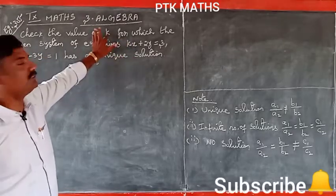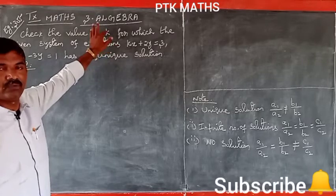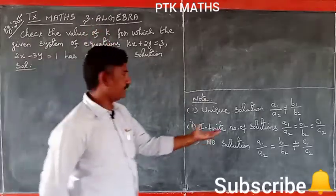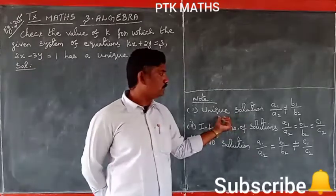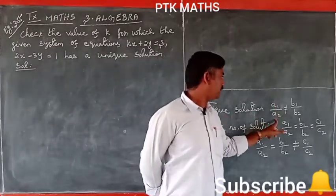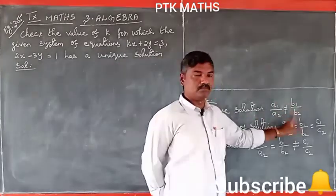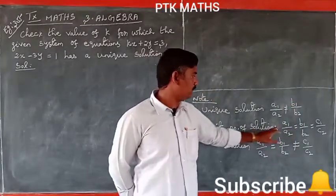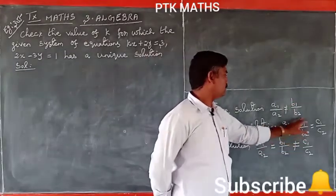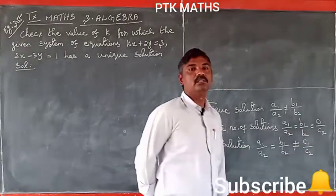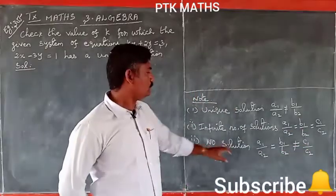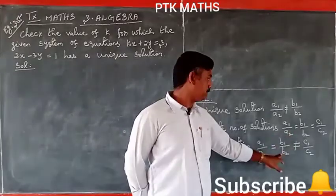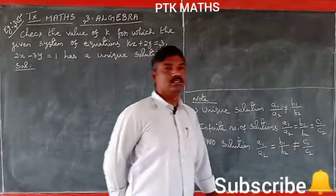For a unique solution, the condition is a1 by a2 not equal to b1 by b2. For infinite number of solutions: a1 by a2 equal to b1 by b2 equal to c1 by c2. For no solution: a1 by a2 equal to b1 by b2, but not equal to c1 by c2.